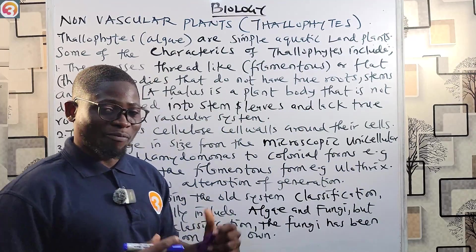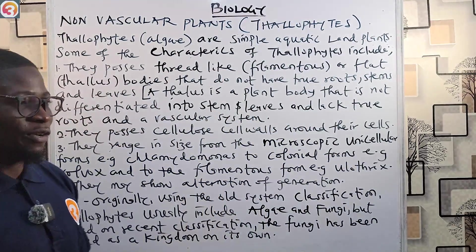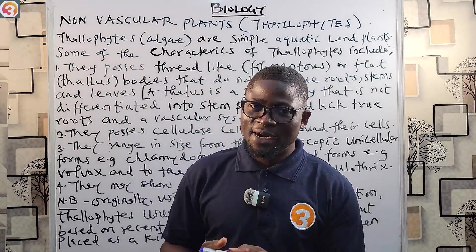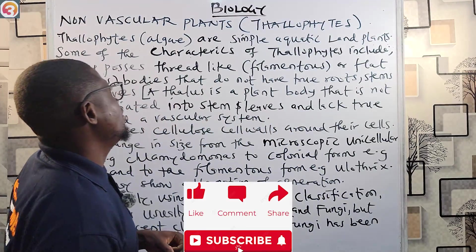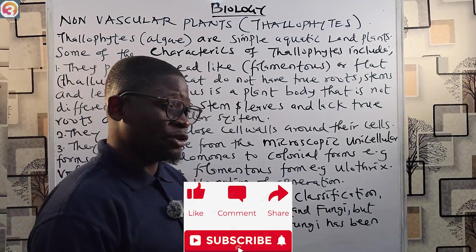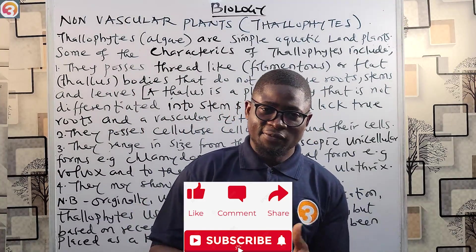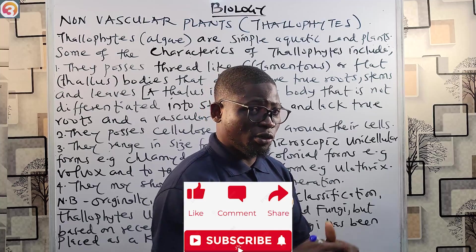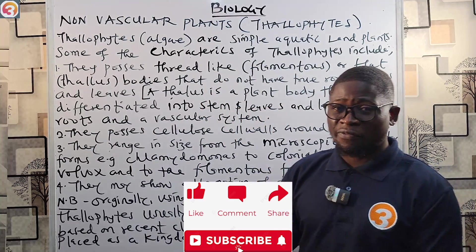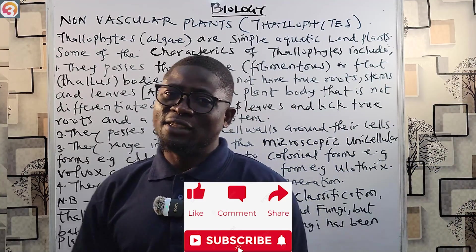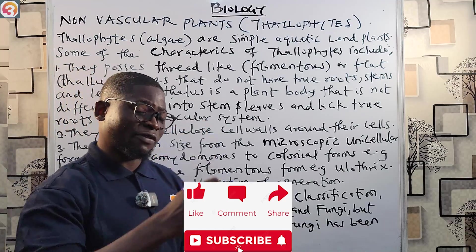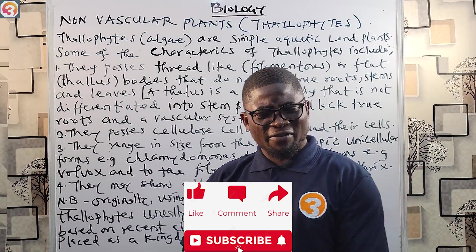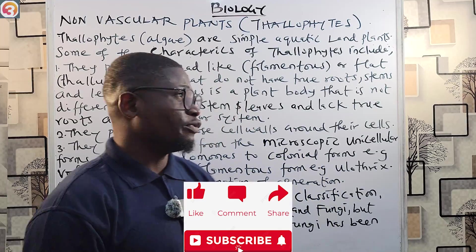Hello guys and welcome back to another episode of biology. Today we are going to continue our discussion on the plant kingdom — Kingdom Plantae. In the last episode we talked about the classification of the plant kingdom into the talophytes, bryophytes, teridophytes, and spermatophytes. The spermatophytes are divided into the angiosperms and the gymnosperms.